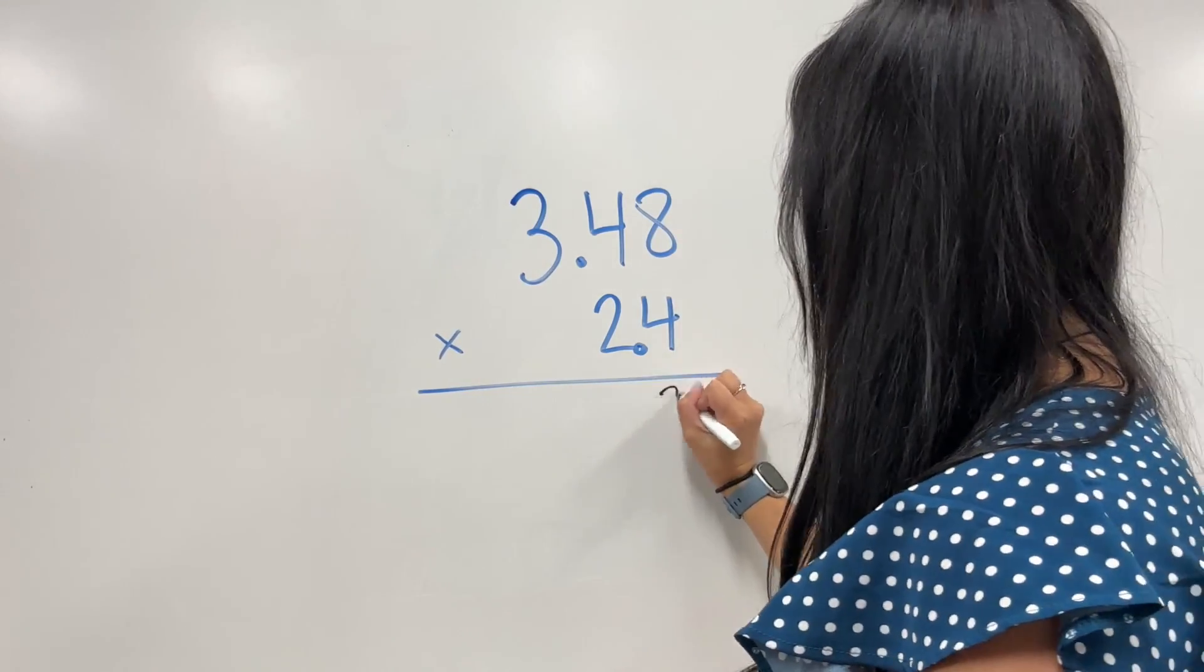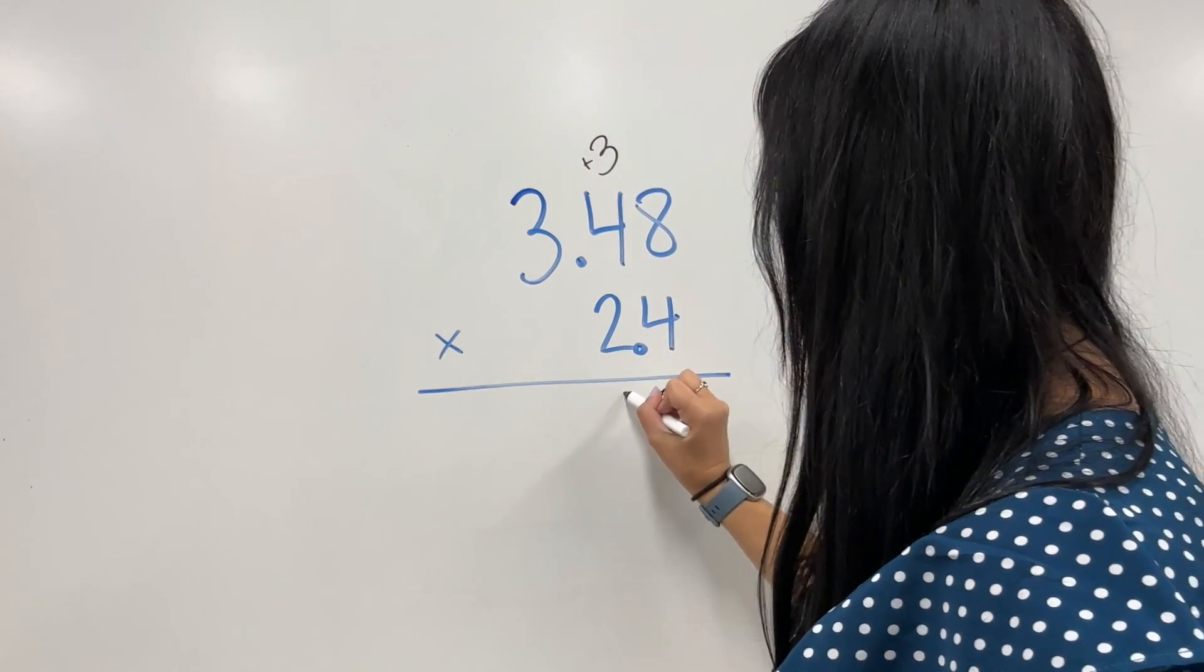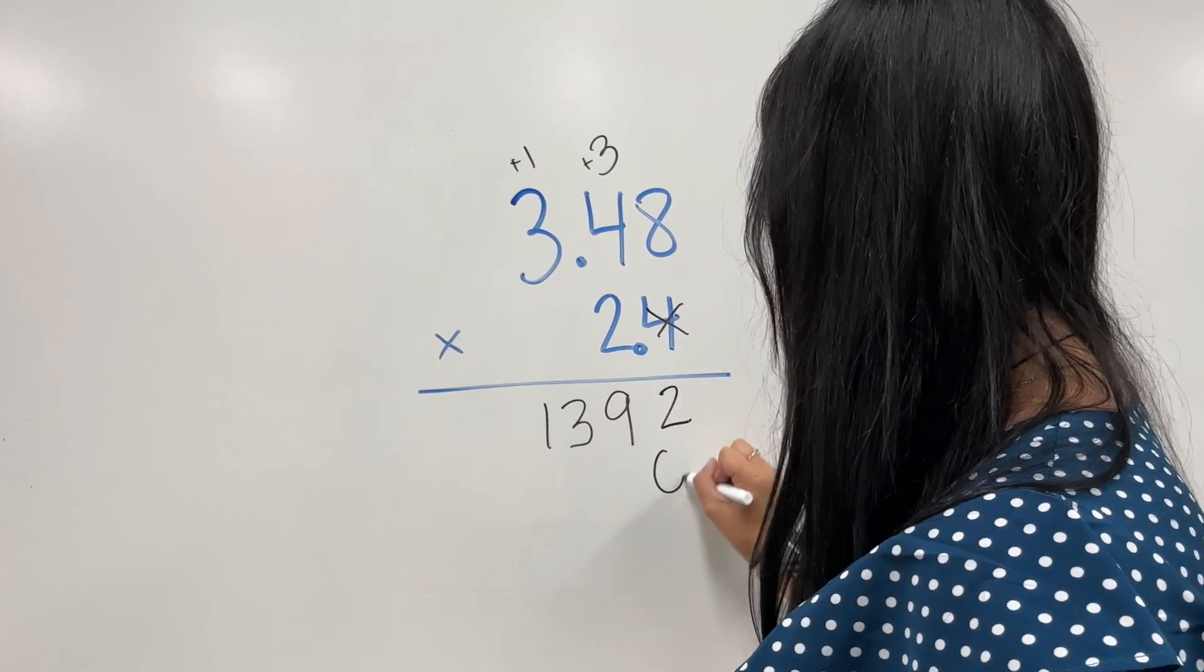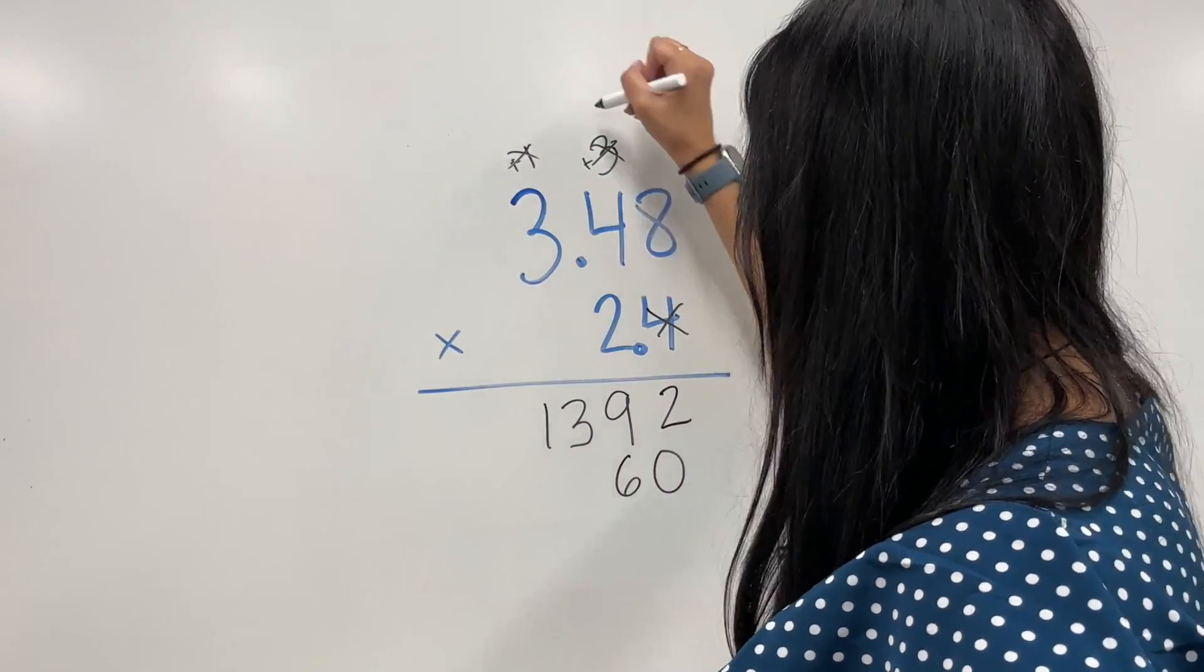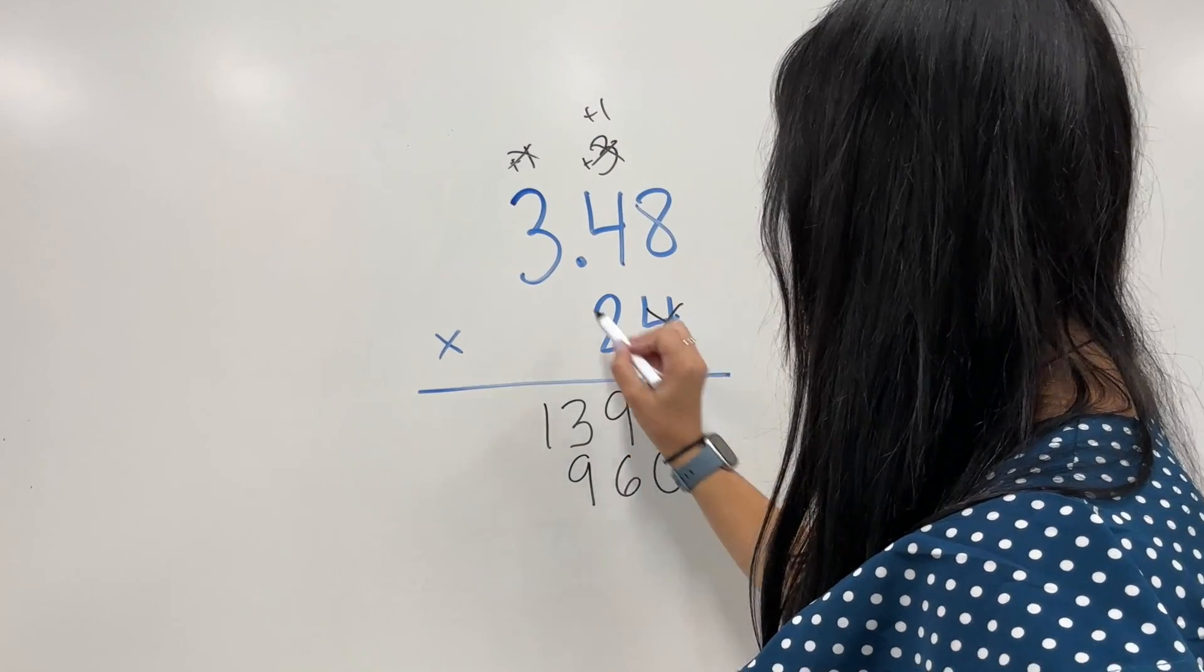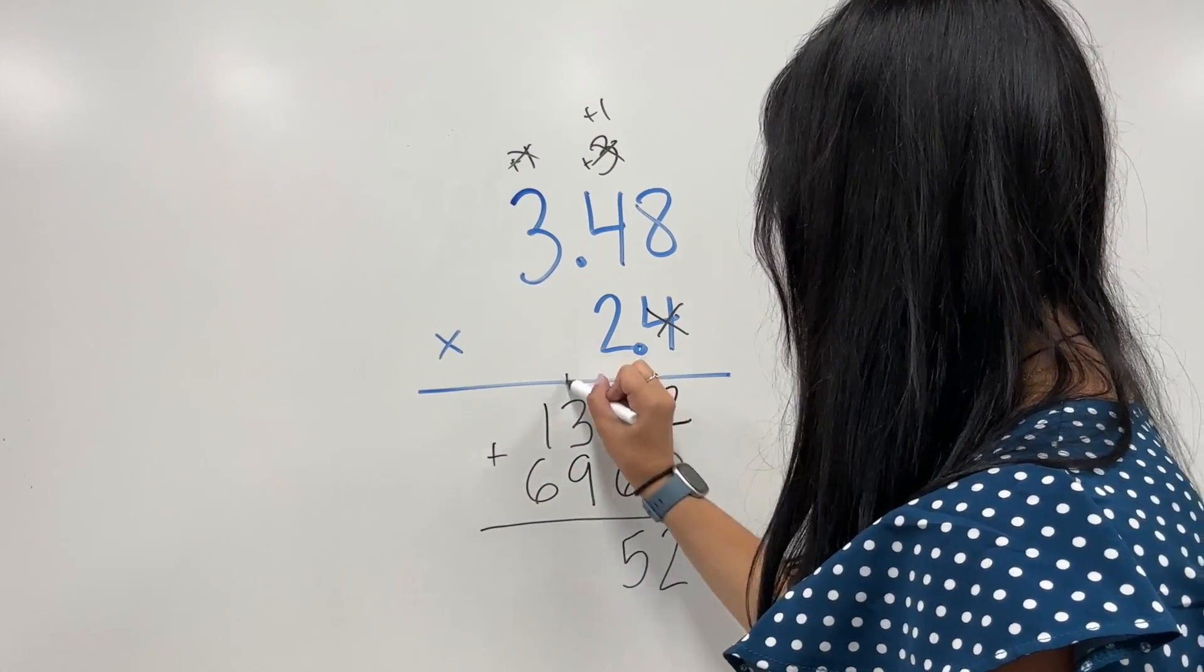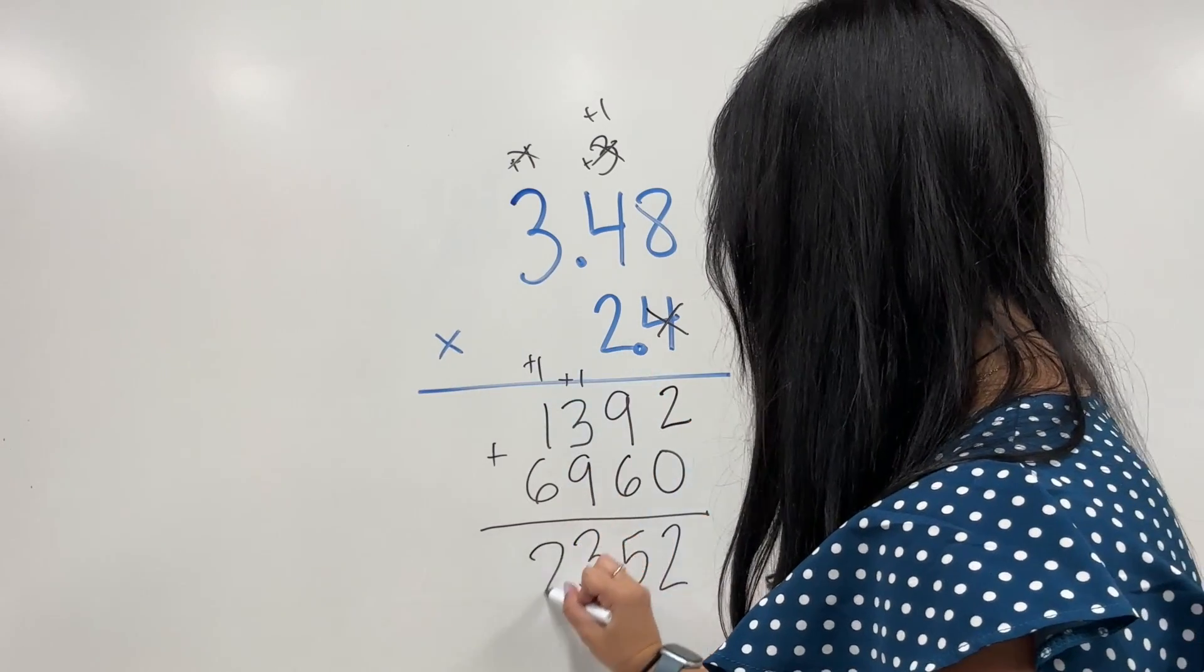4 times 8 is 32, carry the 3. 4 times 4 is 16, plus 3 is 19, carry the 1. 4 times 3 is 12, plus 1 is 13. Cross it, drop it, add a zero. 2 times 8 is 16, carry the 1. 2 times 4 is 8, plus 1 is 9. 2 times 3 is 6. Add those up like normal, giving us 8352.